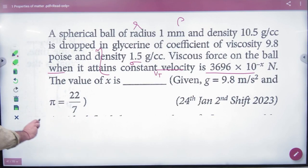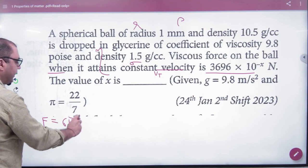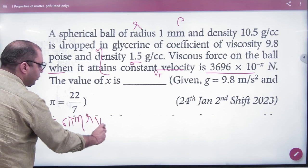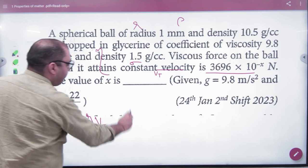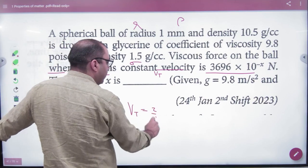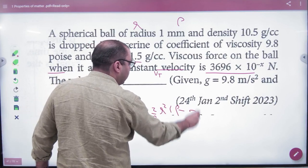The viscous force formula is F = 6πηRv. Here, v is the terminal velocity. First, write the terminal velocity formula and put all values.